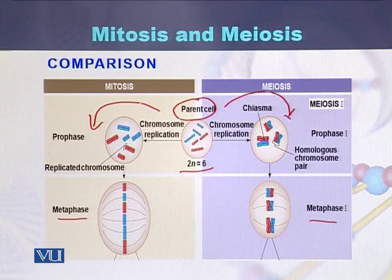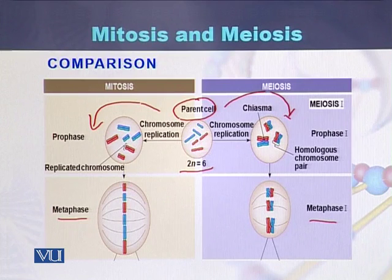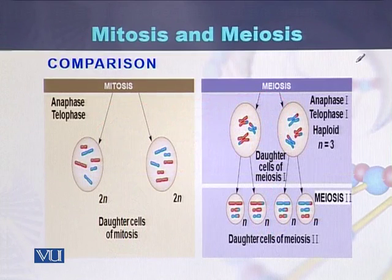If we do the comparison at the level of metaphase: during metaphase the chromosomes will be aligned in the middle of the cell, and the same will be in case of meiosis — chromosomes will be aligned in the middle. But in meiosis during metaphase one chromosome faces towards one pole while the second chromosome faces towards the second pole.